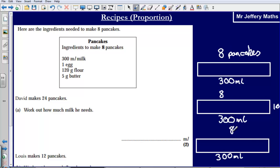So now how many pancakes have I made? Well I've made 8, another 8, and another 8. So 3 eights, that's now 24 pancakes. How much milk have I used to do this? Well I've used 300 to make 8, another 300 to get me up to 16 pancakes, and another 300 milliliters of milk to get me up to 24 pancakes. So how much milk does David need? He needs 900 milliliters. 300 plus another 300 plus another 300.